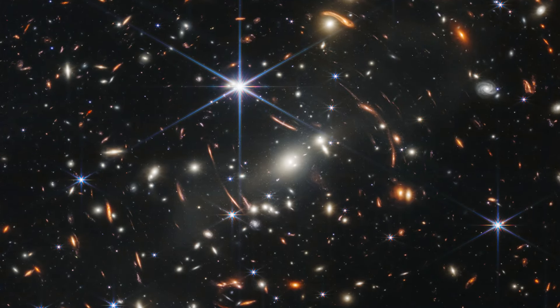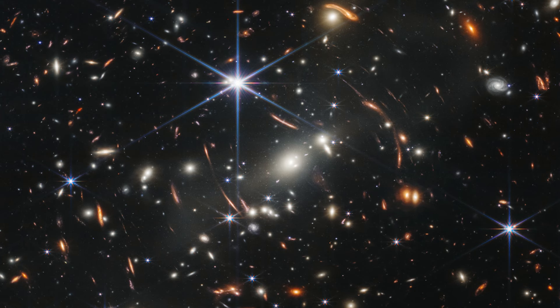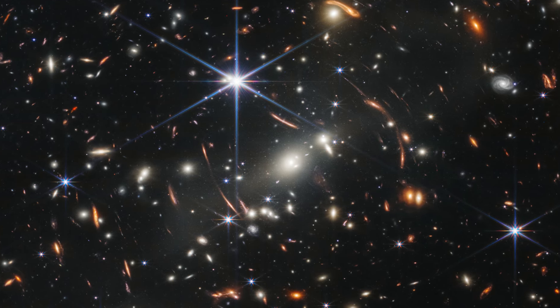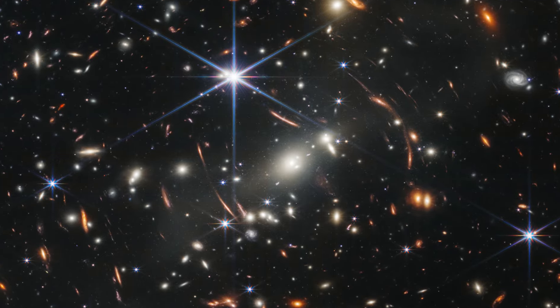The principle is similar to that of gravitational lensing, where light bends around massive objects. By tracking the altered courses of hypervelocity stars, astronomers can infer the mass and location of dark matter.